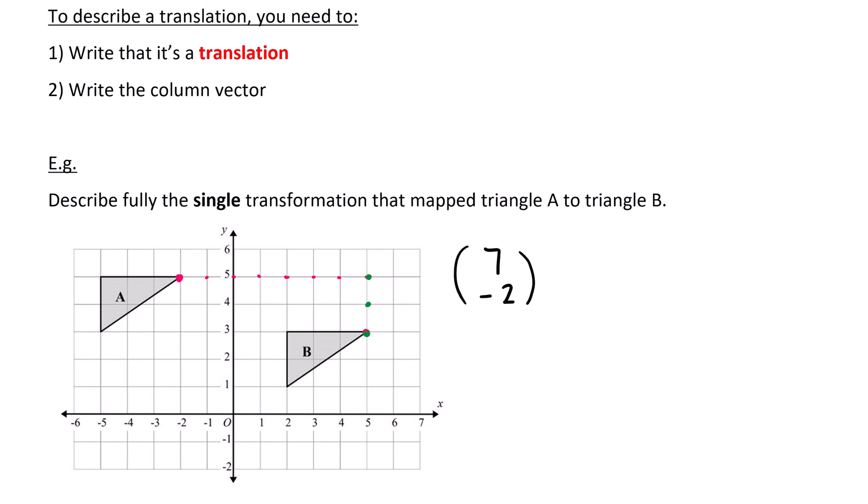So I now need to write this fully. It's a translation by seven negative two. You could write by the vector seven minus two, but it's not necessary. So we've done both. We have said that it's a translation, and we've also written the column vector. And that is how you translate a shape and describe the transformation.